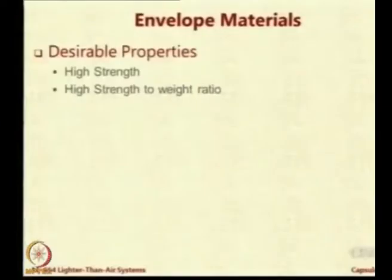Strength is determined in both directions and need not be the same. In general, LTA materials are anisotropic — they have material properties that differ by direction. Secondly, we would like the material to take the load at the least possible self-weight, because self-weight deducts from gross lift to give net lift. A fabric that is very good at taking load but very heavy is not of much use in LTA systems. The challenge is to make it load-carrying but with low self-weight.